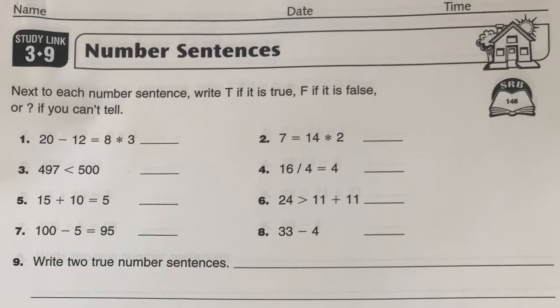So let's look at the first one we have here. 20 minus 12 is equal to 8 times 3. Well, let's see. 20 minus 12 is going to be 8. 8 times 3 is 24. Those are not equal. That is false.